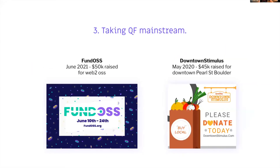We are experimenting with taking quadratic funding mainstream. We did a quadratic funding experiment in partnership with Open Collective in a project called Fund OSS in June 2021, where we raised $50K for web2 open source software — quadratic funding works outside of Ethereum. In May 2020, we did downtown stimulus, a quadratic funding experiment for downtown Boulder, Colorado — comic book shops, coffee shops, restaurants — successfully supporting Boulder's downtown. Quadratic funding scales outside of tech; we funded a comic book store using quadratic funding.